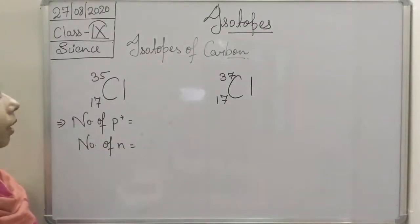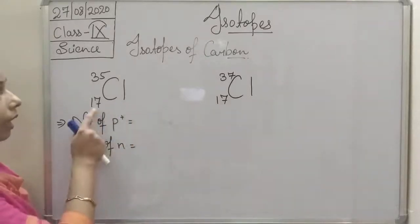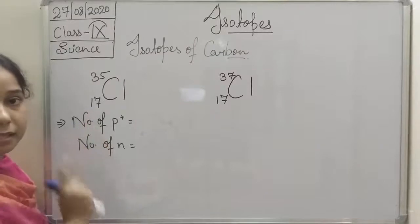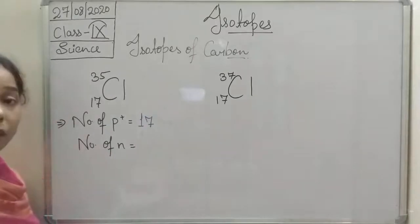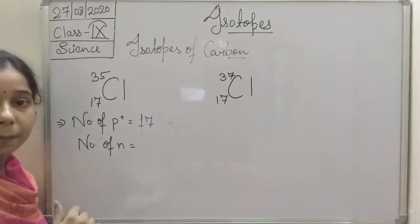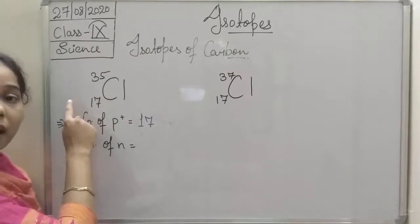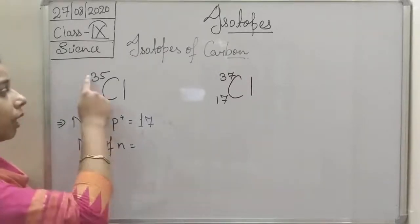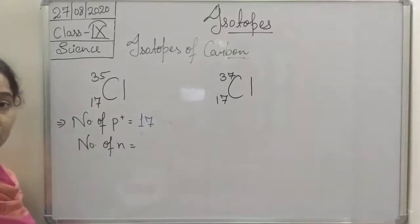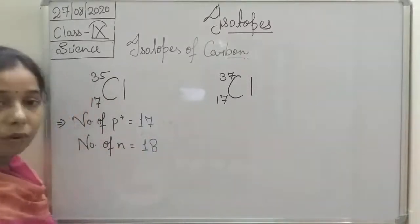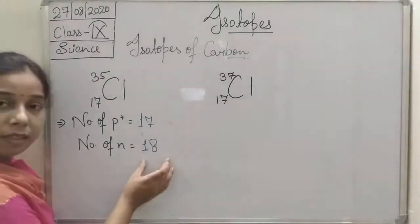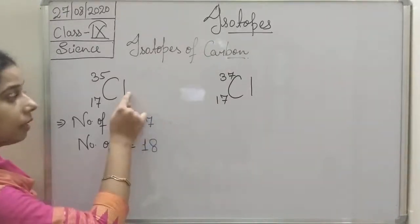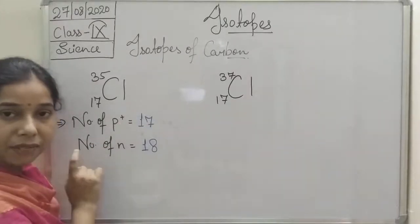The number of protons in chlorine equals the atomic number, which is 17. So number of protons is 17. The mass number is 35. Number of neutrons equals 35 minus 17, which is 18. So 17 protons and 18 neutrons for chlorine-35.